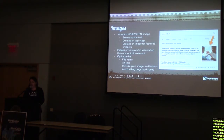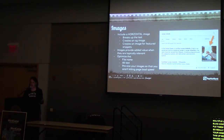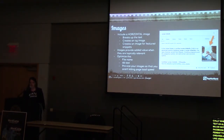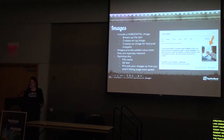On to images: use horizontal images — they take up less space, especially on mobile, and break up the text. They also create an OG (Open Graph) image that feeds Facebook, Twitter, and other social platforms. You can customize OG images in Yoast as well. Having a relevant image also matters for featured image snippets — if you don't have a closely related image, Google may pull one from another website, which can steal traffic even when you have the featured snippet. Optimize your images: include a keyword in the file name rather than something like 'getting-images-123.png', add relevant alt text, and pre-size your images so the server doesn't have to resize them, which slows your load speed.